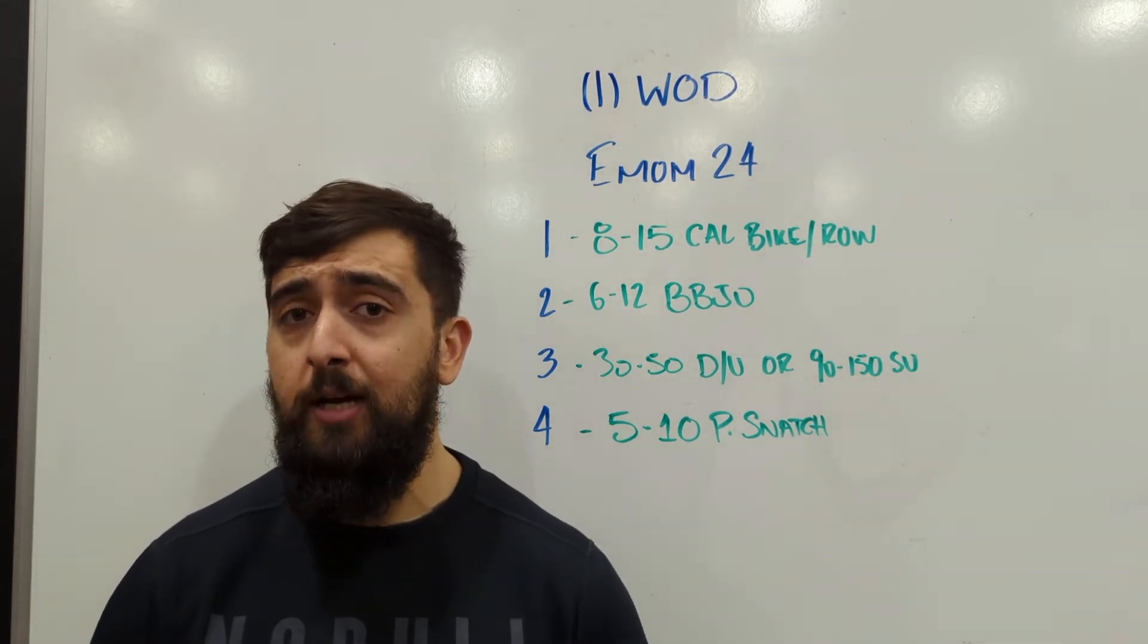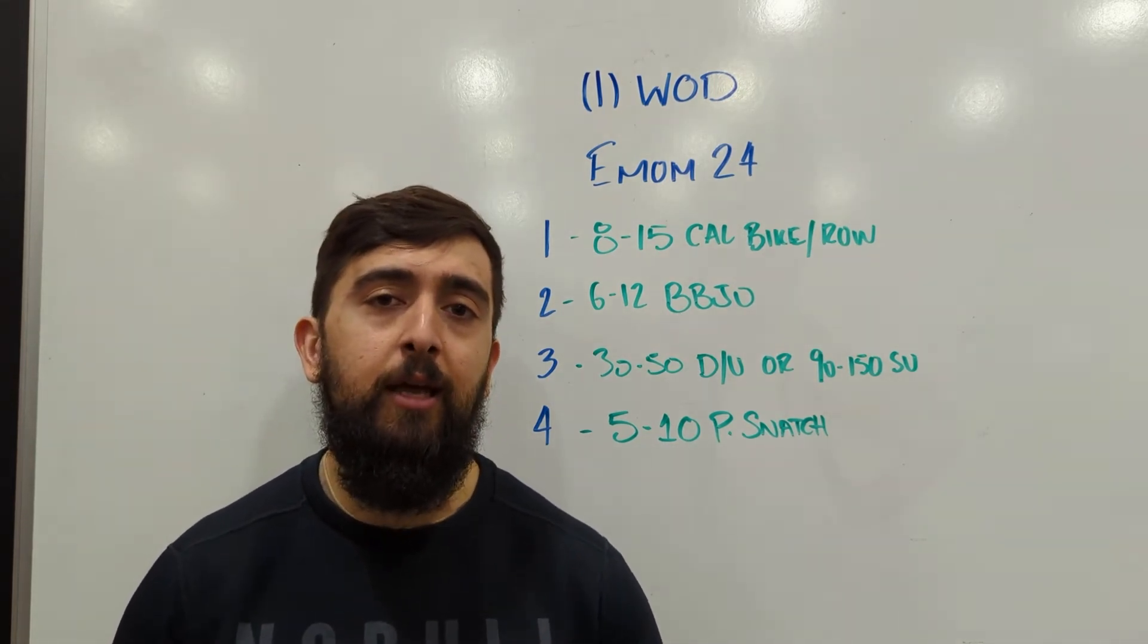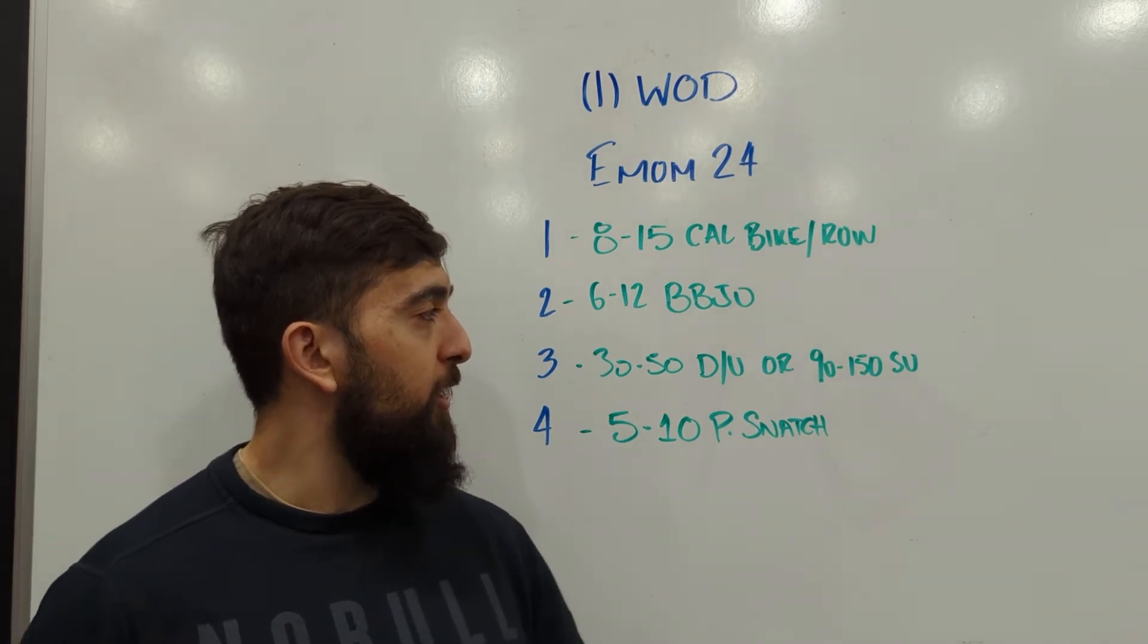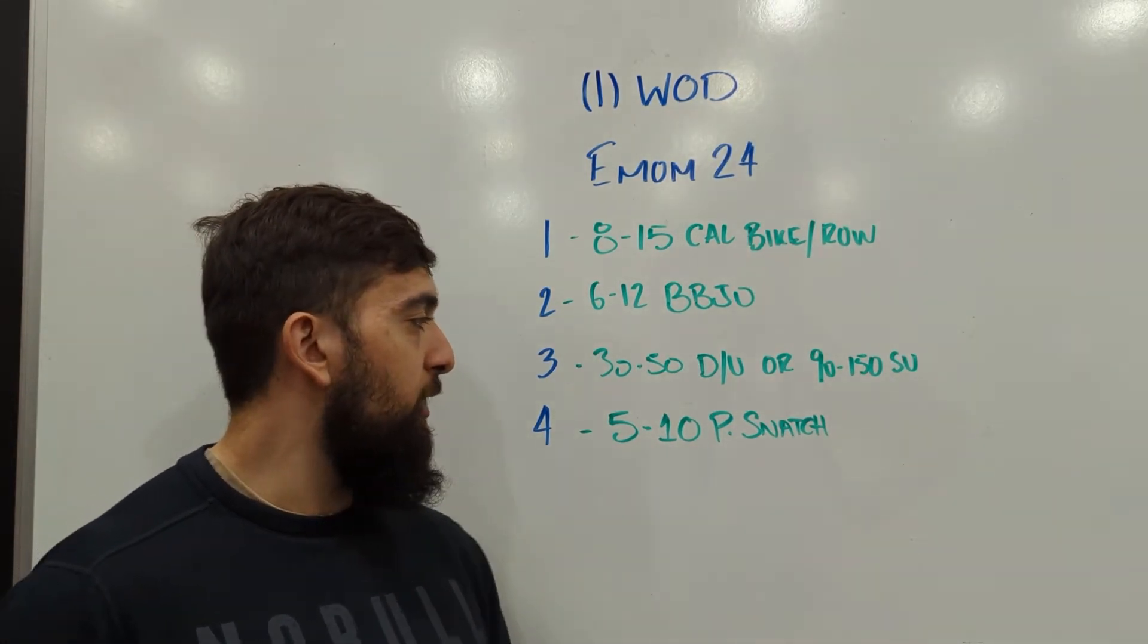You want to be working for at least 30 seconds, but no more than 45. So you can kind of watch your clock to get a gauge of how many reps you're doing. Third minute, 30 to 50 double unders or 90 to 150 single skips.